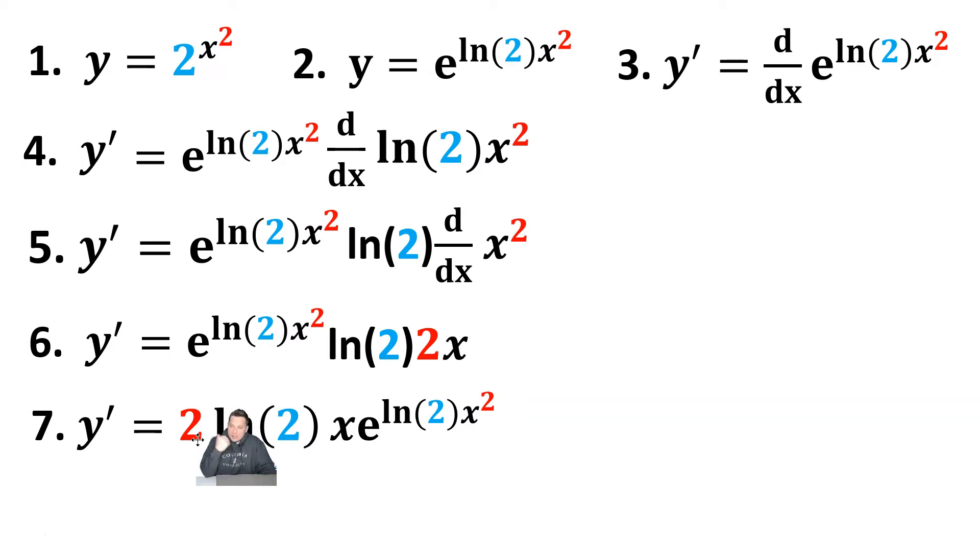Remember, e and ln functions are inverses. So if you want to restore everything to step 1 to that essential form, what you can do is cancel off the e and ln because they're inverses. And you can just write it lastly as y prime equals 2 ln of 2x times 2 to the x squared. So then this here would be considered the final answer.